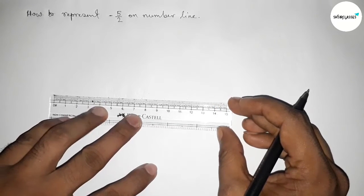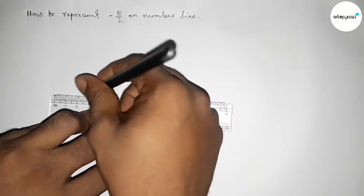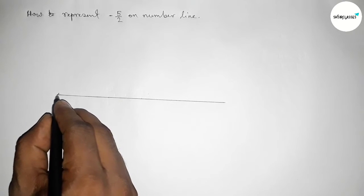First of all we have to draw here a number line. So first drawing here a line of any length and taking arrow mark on both side.